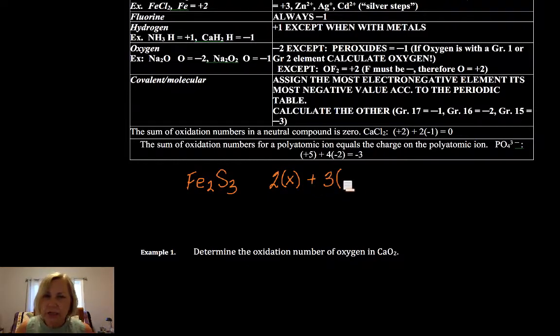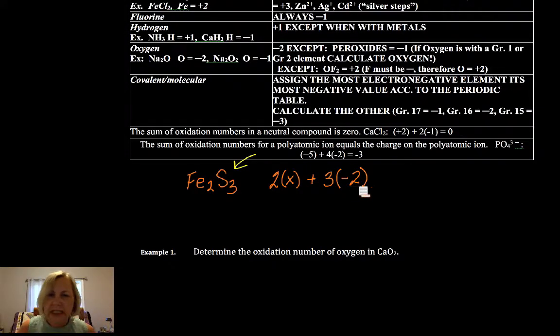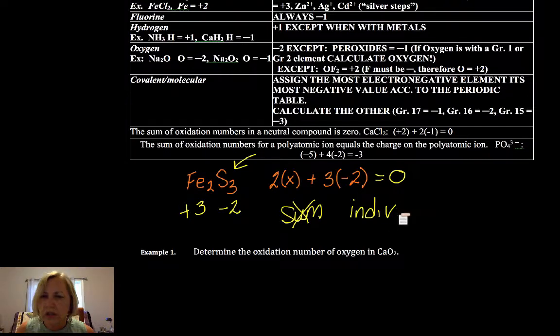We're going to assign sulfur to be as negative as it can be. This is what you did back when you first learned naming. There is nothing in the upper right-hand corner indicating a leftover charge, so that equals 0. That tells us that each iron is plus 3. Each sulfur is minus 2. You don't want to multiply them and get plus 6 and minus 2. You do not want the sum of the oxidation numbers. You want the individual oxidation numbers, individual.